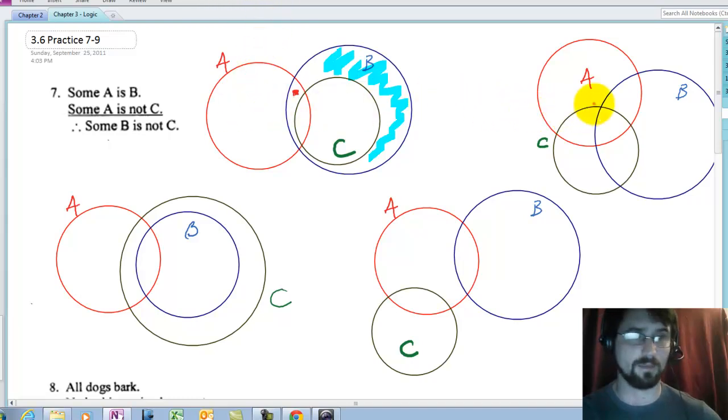Let's look at maybe this one. Some A is B. There's an A that's a B. Some A is not C, and that A again is not C. Some B is not C. Well no, there once again, all this B is not C because it's outside of C.